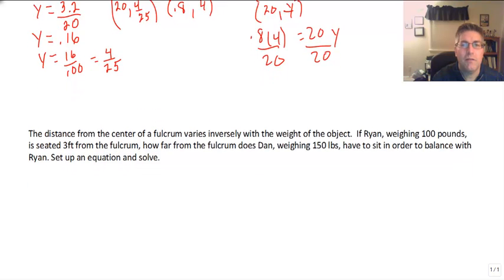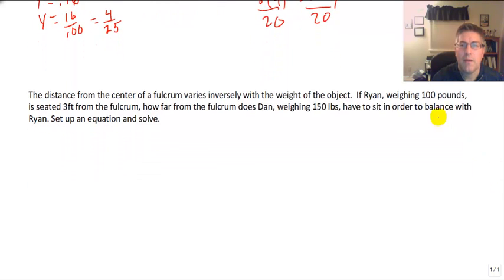Let's take a look at a typical inverse variation problem. Inverse variation problems a lot of times we'll use like the teeter-totter, the fulcrum situation, or the springs. Springs are also good inverse variation problems. So the distance from the center of a fulcrum varies inversely with the weight of the object.